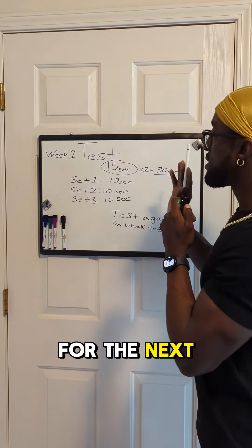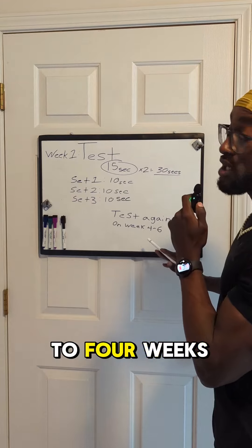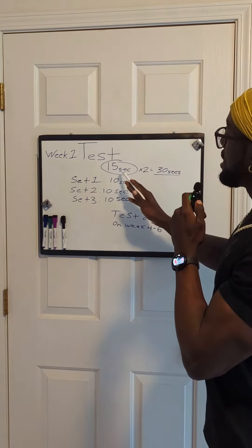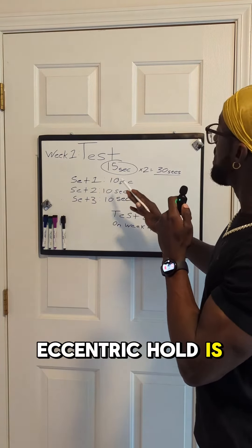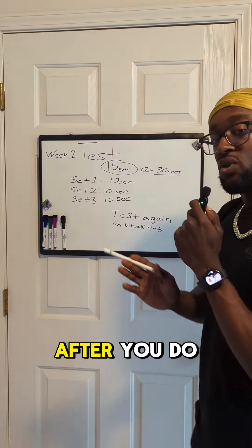For the next six to four weeks. At the end of those weeks, you're going to retest again, see where your eccentric hold is, multiply it by two, and repeat the process.